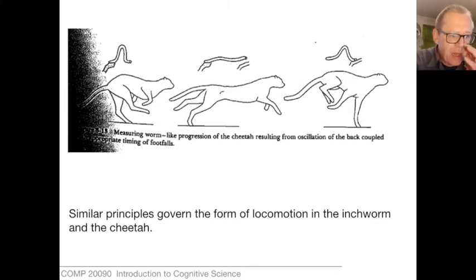Here's a nice example that illustrates similarities between the mode of locomotion of an inchworm. An inchworm is tiny and a cheetah, a radically different animal. But as you can see from the three pictures there, there's something very similar about the way they move.